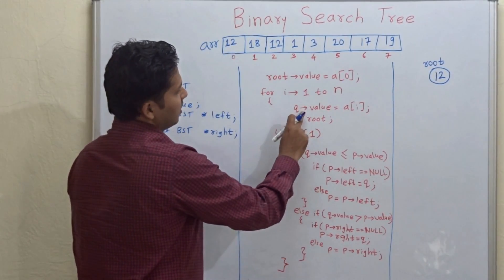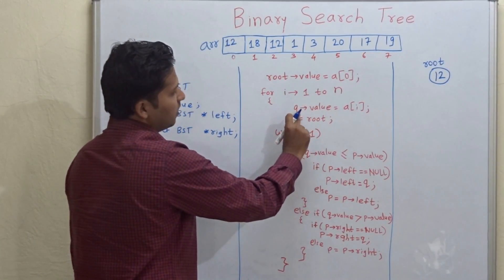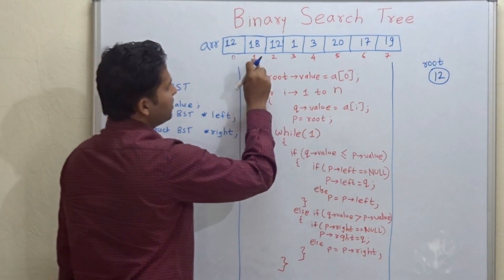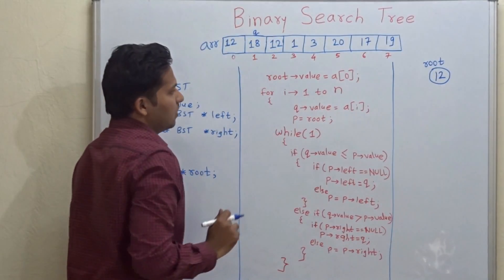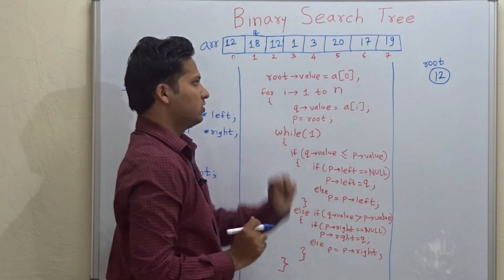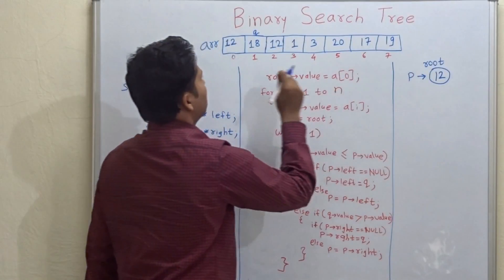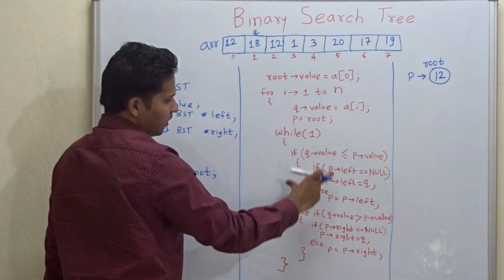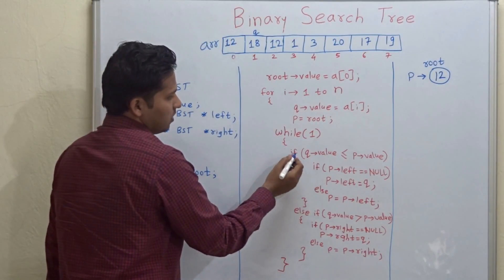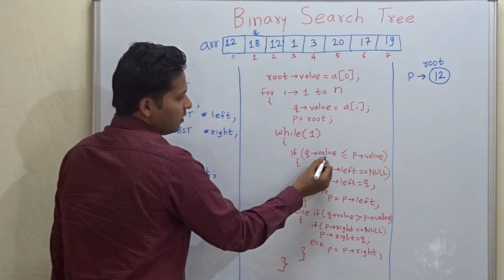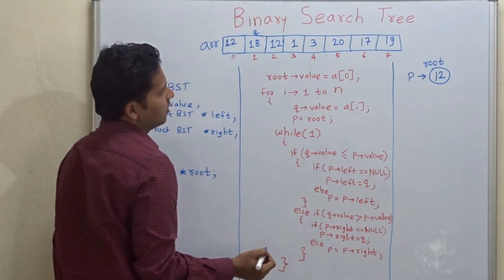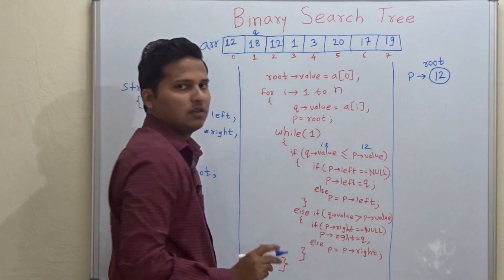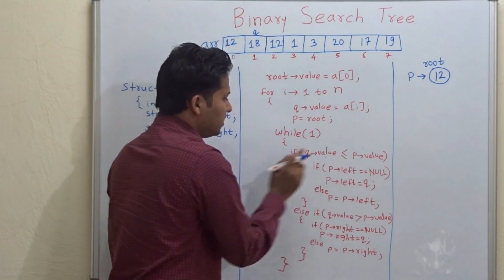For i equal to 1, this is the first iteration. q's value is equal to a[1], so q points to 18. Then p equals root, so pointer p points to the root. We enter the while loop and check: is q's value less than or equal to p's value? Is 18 less than or equal to 12? No, it is not, so this if condition does not satisfy.